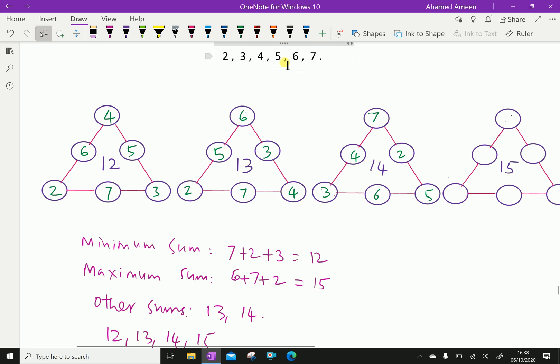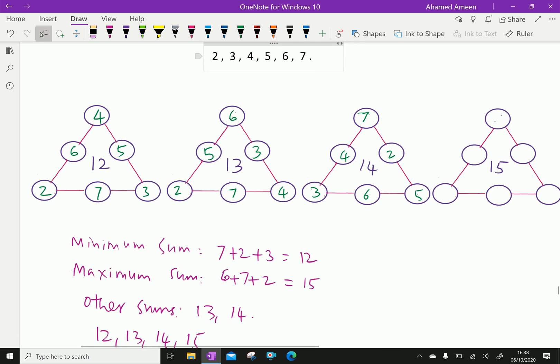So 5 plus 6 is 11, 11 plus 4 is 15. Then 6 plus 7 is 13, 13 plus 2 is 15. Then 5 plus 7 is 12, 12 plus 3 is 15.